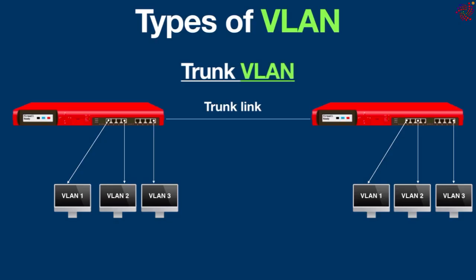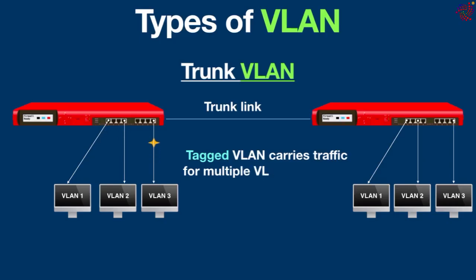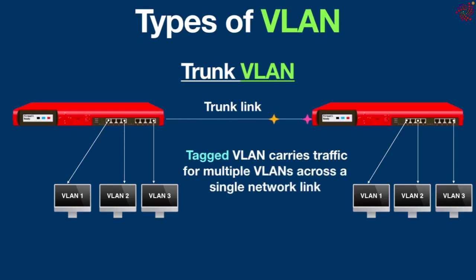Trunk VLAN, also known as tagged VLAN, carries traffic for multiple VLANs across a single network link. You don't need a separate cable for every VLAN between switches — just one trunk link acts like an elevator serving all the floors.